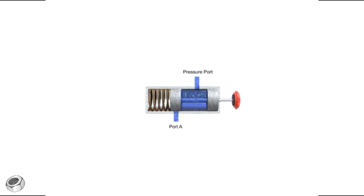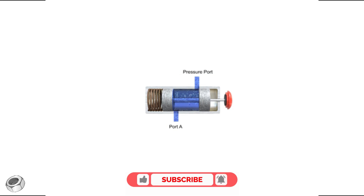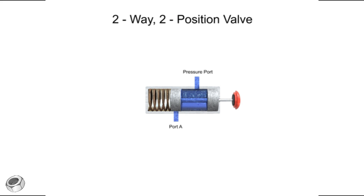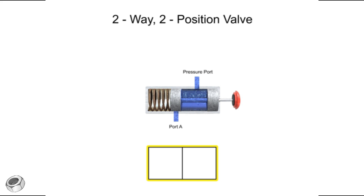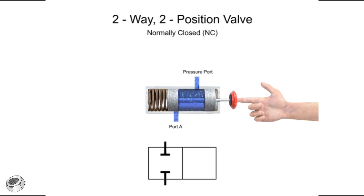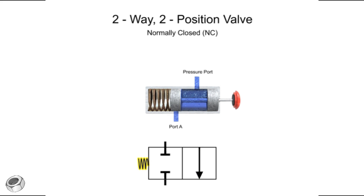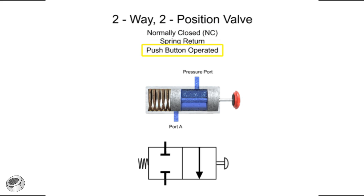Here is a similar valve to the one previously shown. It has two ports and two positions, so it is also a two-way, two-position valve. In the normal non-actuated position, both ports are blocked — therefore, it is a normally closed valve. When the valve is actuated, fluid is allowed to flow from the pressure port to port A. A spring returns the valve to its normally closed position, and a push button actuates it to the open position. Therefore, this valve is a two-way, two-position, normally closed, spring return, push button operated valve.